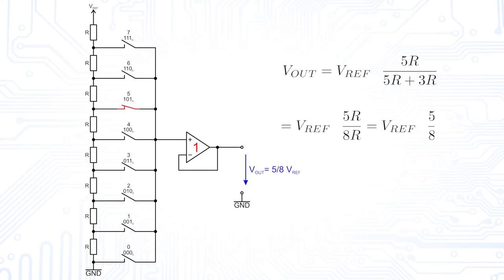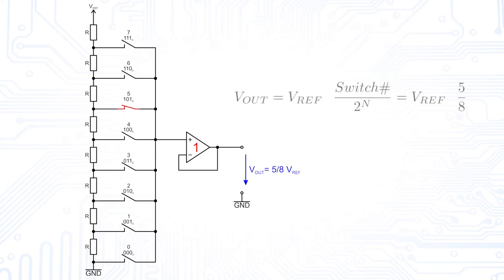The output buffer in this example features a gain of 1 and is only there so that the output does not load the voltage divider and thus falsify the output voltage. A look at the 3-bit DAC transfer function shows that our calculated response matches the ideal function.